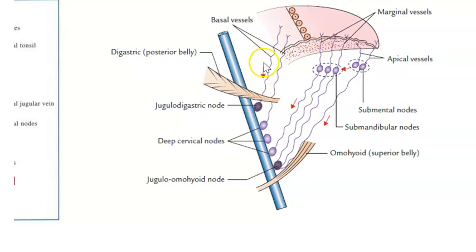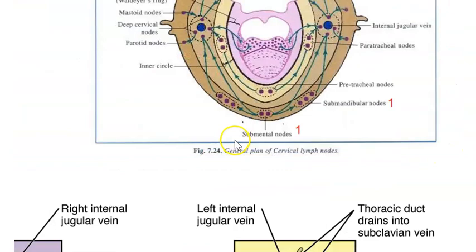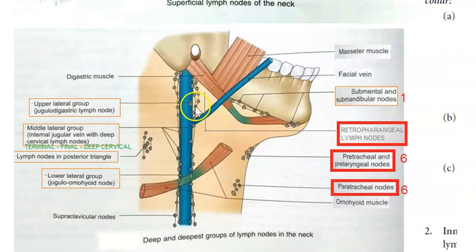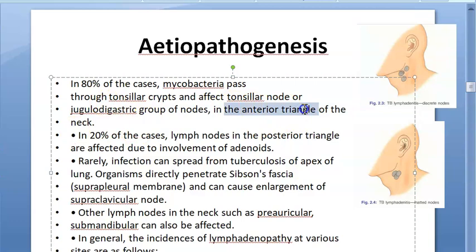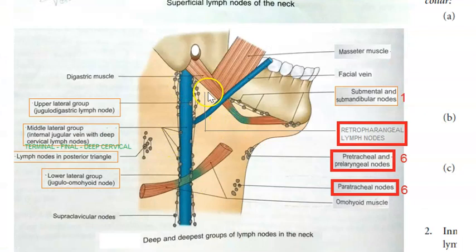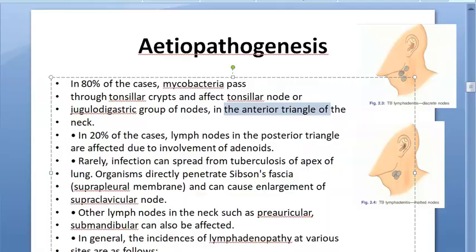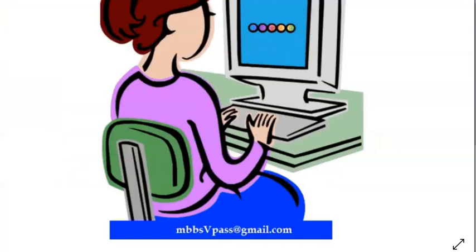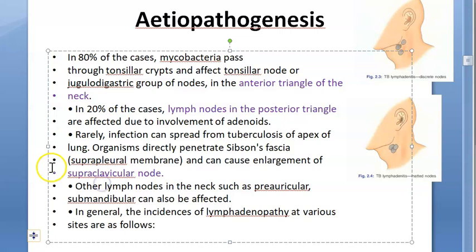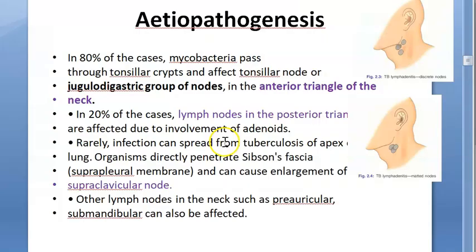You should know the levels of lymph nodes. The upper lateral group is the jugulodigastric lymph node. This is in the anterior triangle of the neck — anything in front of your sternocleidomastoid becomes the anterior triangle. Sometimes, very rarely, the posterior triangle lymph nodes can get involved due to adenoids. Supraclavicular, preauricular, and submandibular nodes can also be affected.